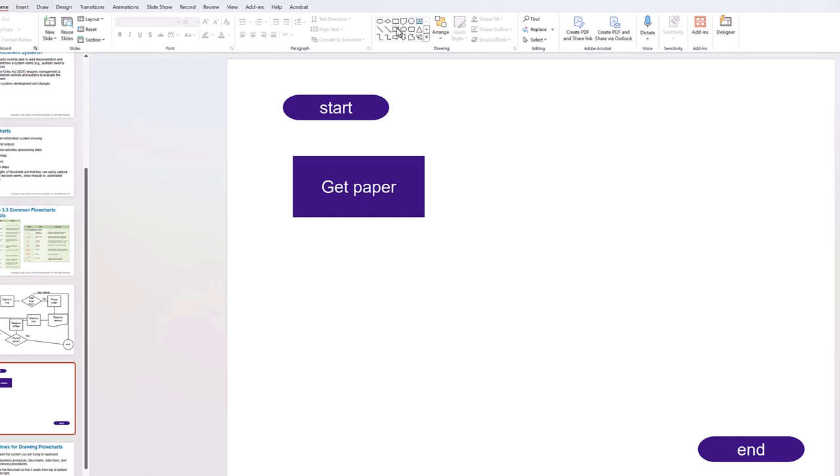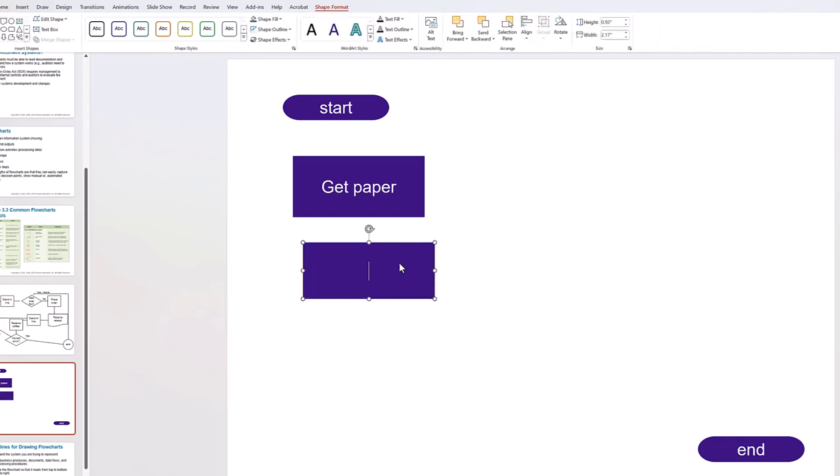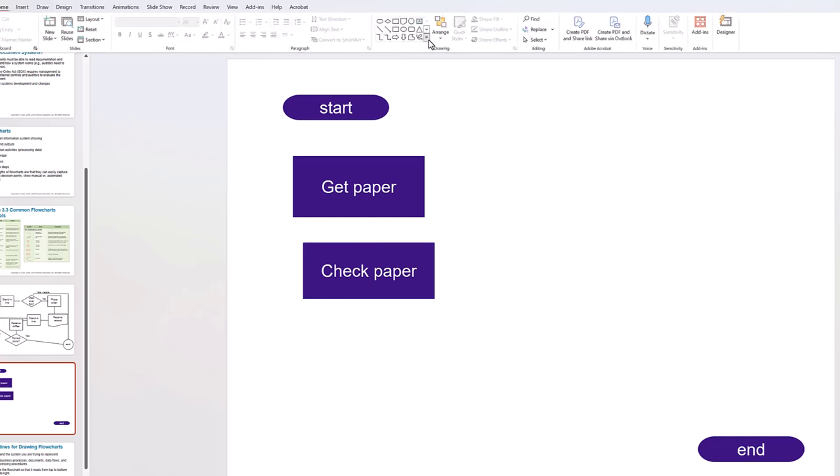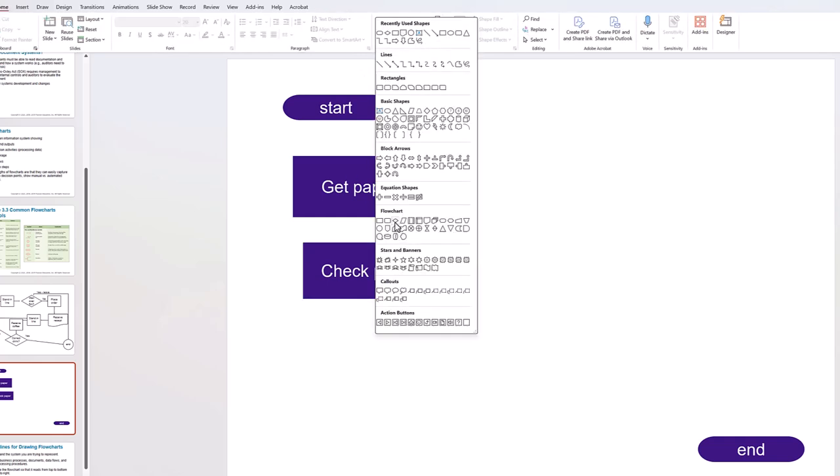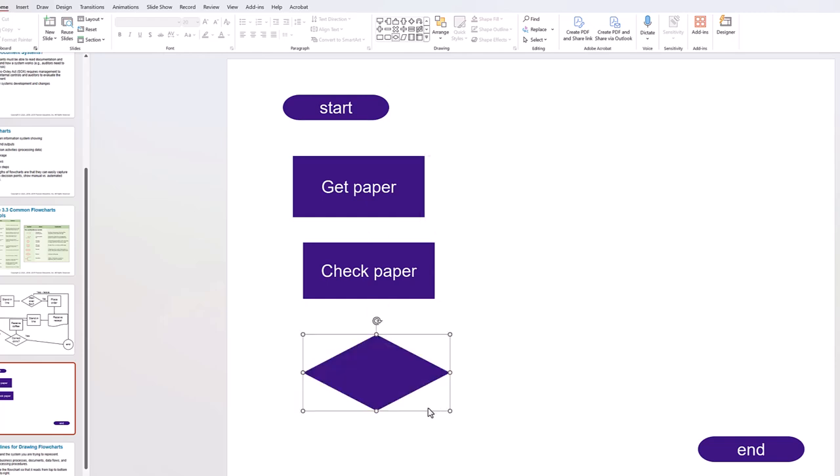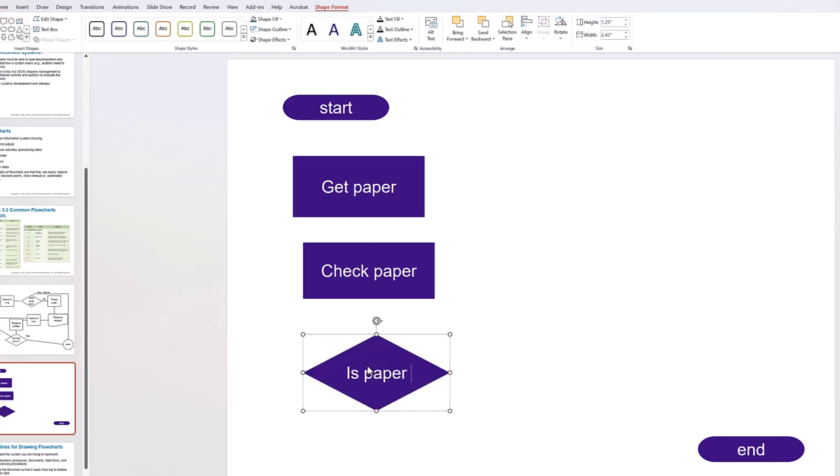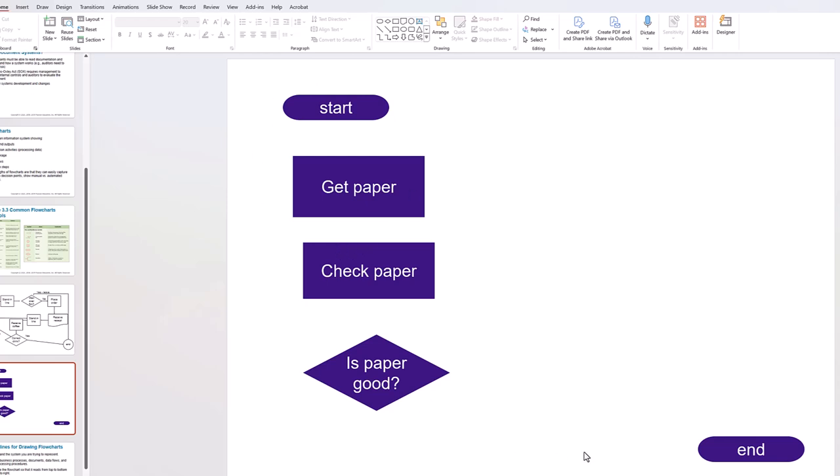Let's do another one. And again, you can click up here if you want. It has sort of like the most commonly used ones. Check paper, you know, whatever it is. And let's insert a decision point. Is paper good? All right. So, we have a couple of processes.